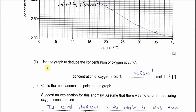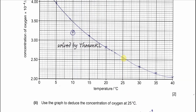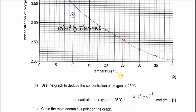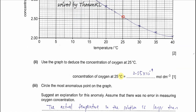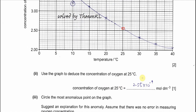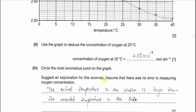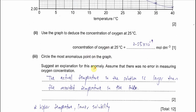Part d, part 2: Use the graph to deduce the concentration of oxygen at 25°C. Reading from the graph at 25°C gives approximately 2.55×10⁻⁴ mol/dm³. Then, circle the most abnormal point on the graph.